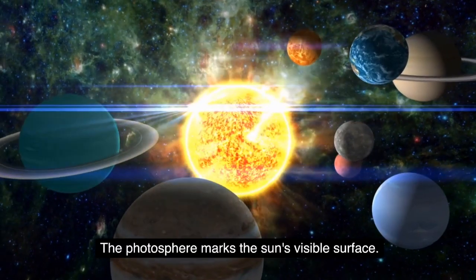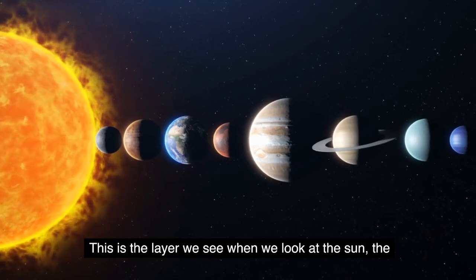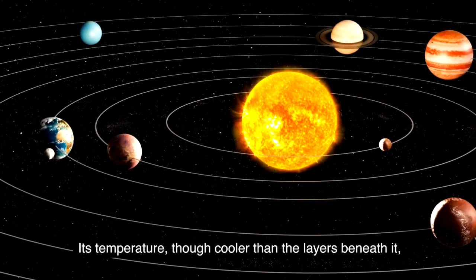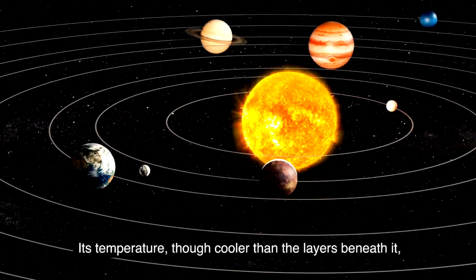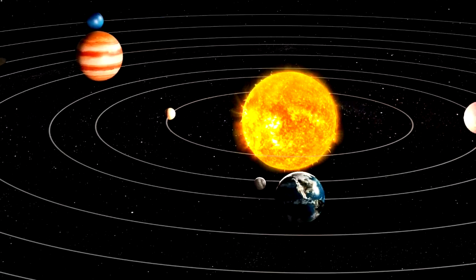The photosphere marks the sun's visible surface. This is the layer we see when we look at the sun, the one that emits the sunlight we experience on Earth. Its temperature, though cooler than the layers beneath it, still stands at a scorching 5000 degrees Celsius.